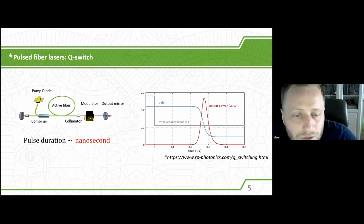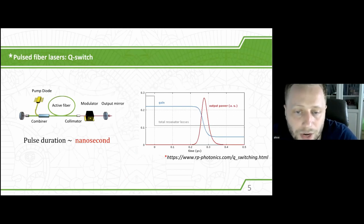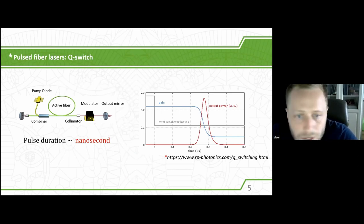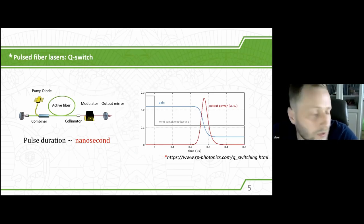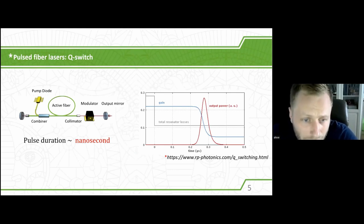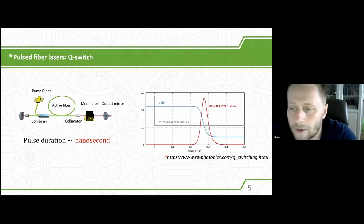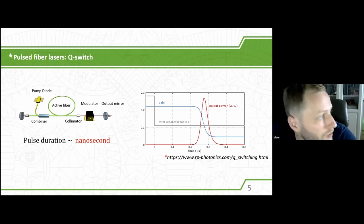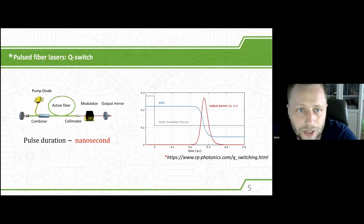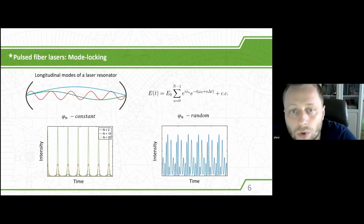The most straightforward way to create pulses inside a fiber cavity is to put an amplitude modulator inside and modulate the total resonator losses. But the problem is that this technology cannot achieve pulses shorter than probably several nanoseconds. So if you want to generate pulses on a femtosecond scale, you need to address the mode-locking technique.